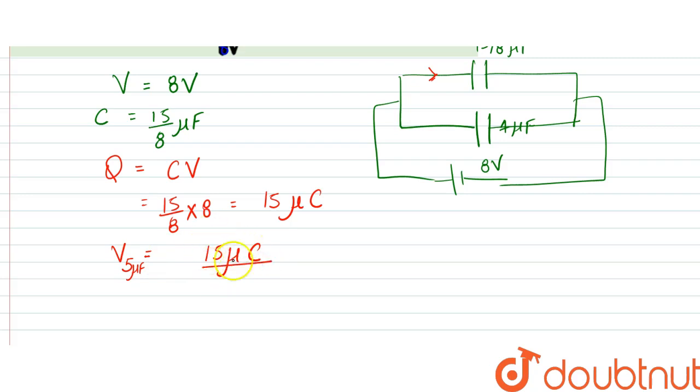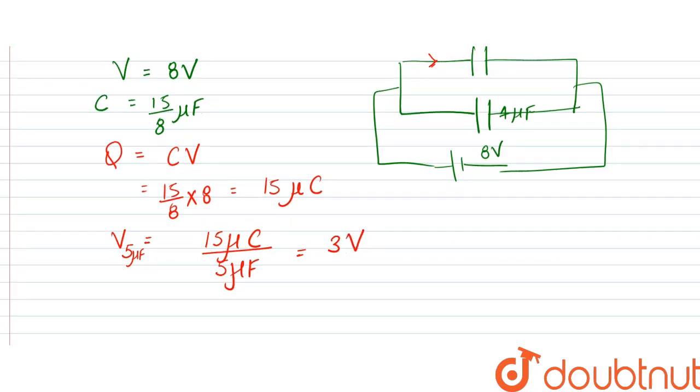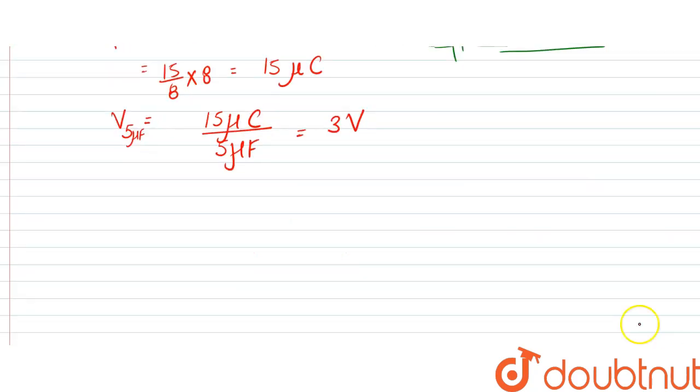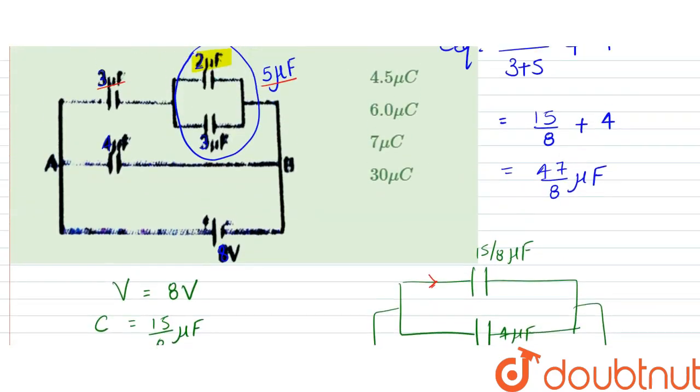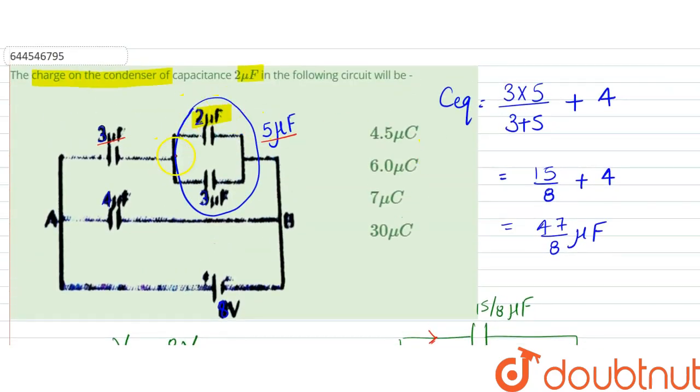Divided by the capacitance is 5 microfarad, right, so that would be equal to 3 volts. So across it the potential would be 3 volt, right, the potential here would be 3 volt.